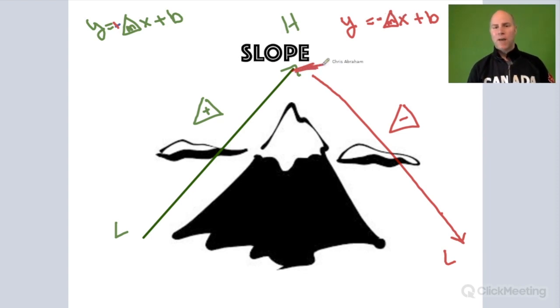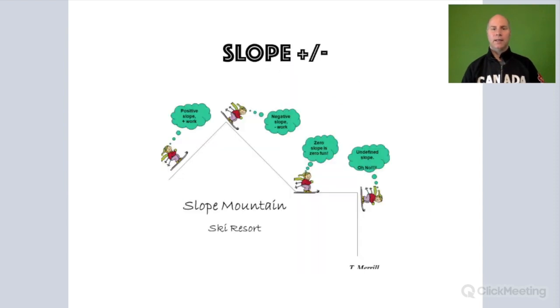What about if we're on top of the mountain? We're just resting on the top of the mountain. What would that be? Well it's not negative, it's not positive, there's no slope. So whenever we see a flat line, it's a slope of zero.